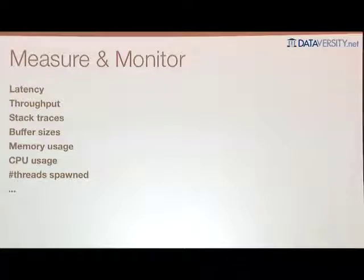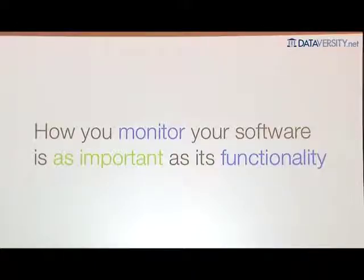Part of the engineering process should be listing every knob that affects your software and seeing what happens when you twist them all the way. You should be monitoring every possible aspect: latencies, throughputs, stack traces, buffer sizes, memory usage, CPU usage, and the million other metrics you can collect. I would say how you monitor your software is as important as its functionality, because problems in production will happen — you will have downtime. Even Google went down this past week. The only way to quickly diagnose production problems is by having really good monitoring — that's the key to minimizing downtime. Think of Apollo 13: one reason those astronauts made it back alive is because they had amazing telemetry so engineers on the ground could quickly figure out what was wrong and deploy fixes.